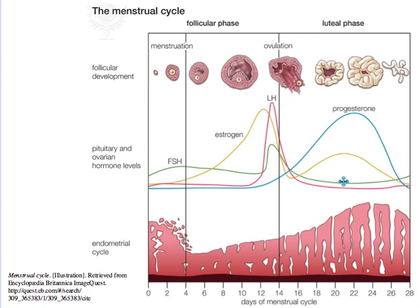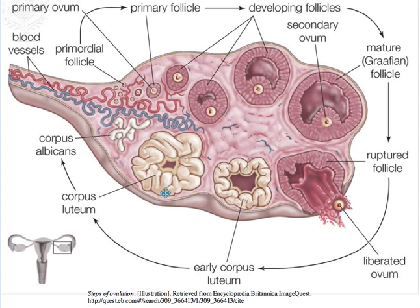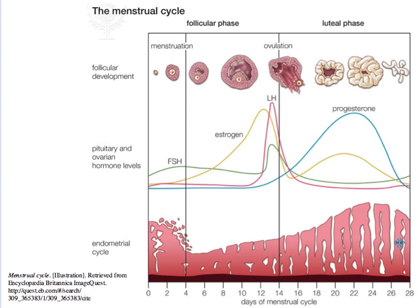As seen here, the levels of FSH and LH drop, corresponding to the fall in estrogen level. While progesterone is maintained, the thick uterine lining continues to develop and stay in place. If fertilization does not occur, the corpus luteum eventually degenerates around day 28, and with the fall in progesterone the lining can no longer be maintained and is discharged as blood and tissue.